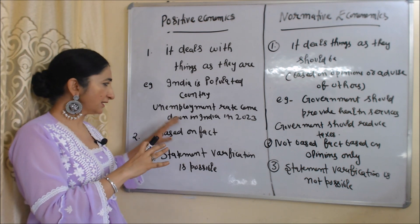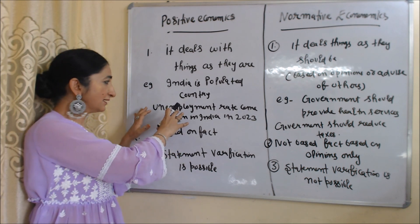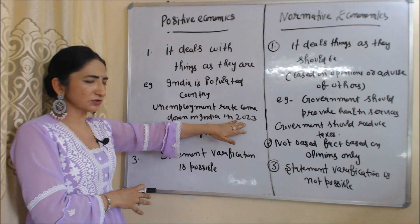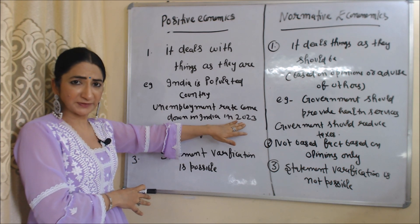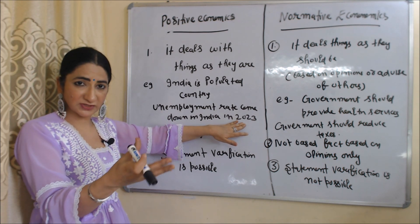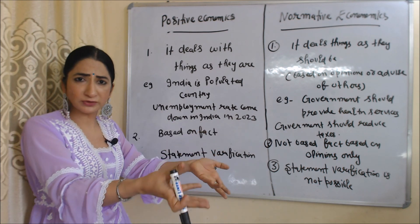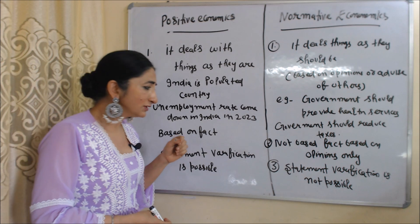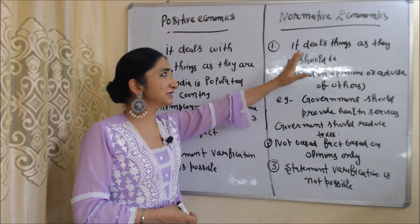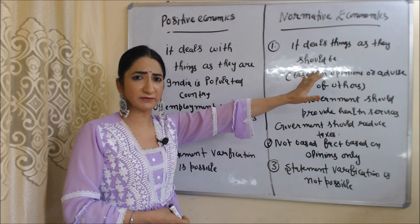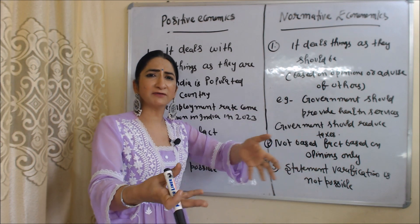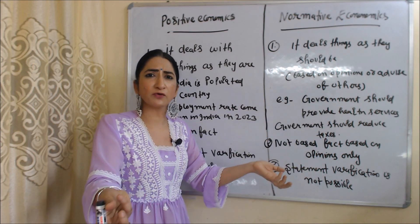We can verify statements in the case of positive economics because it is based on facts. For example, if we say the unemployment rate came down in India in 2023, we can verify this statement by showing data. On the other hand, verification is not possible in the case of normative economics — how can you verify advice or opinions of others?